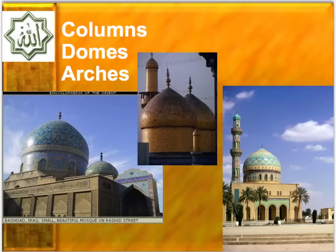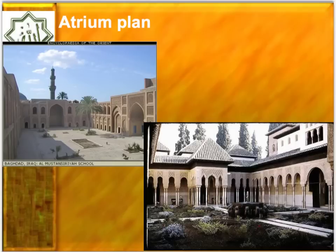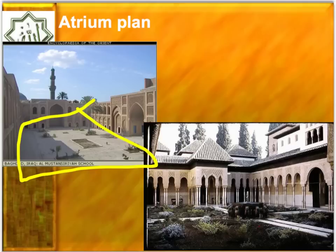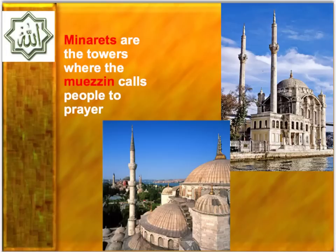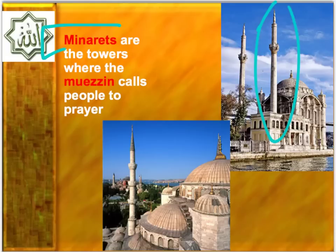Moving on to the architecture: borrowing from the Romans, we see a lot of columns, some arches, and also domes. In the mosque, you tend to have an atrium in the middle, which is an open courtyard that often features a fountain used for ritual washing. Here's a fountain where someone is washing his feet prior to prayer. These towers are called minarets, and the person who goes to the top to make the call to prayer is called the muezzin.